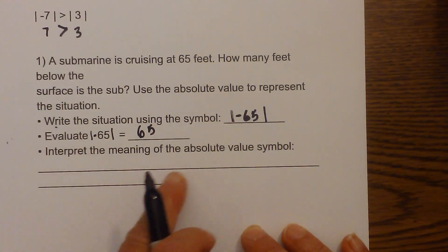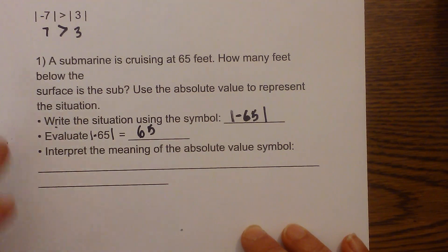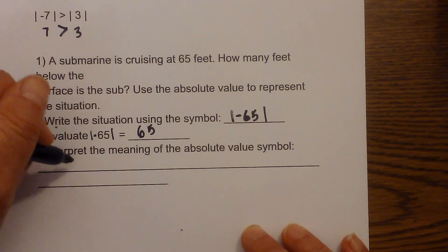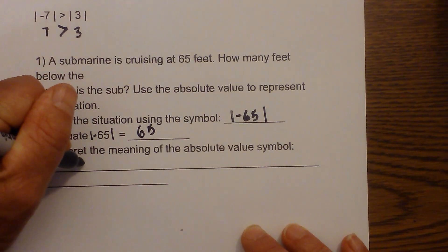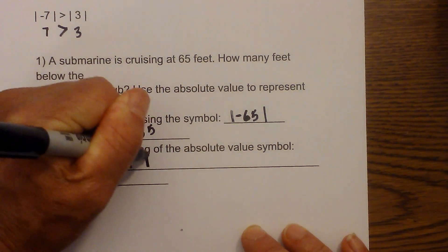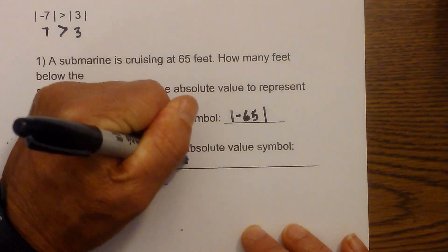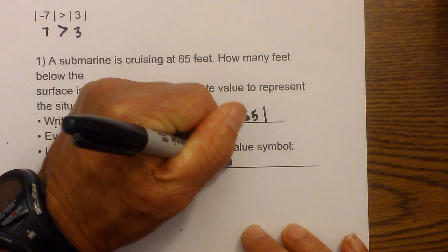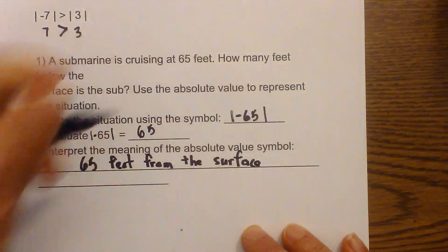Interpret the meaning of the absolute value symbol. It just means that it is 65 feet from 0. And the surface would be 0. So it is 65 feet from the surface, and we are going to assume the surface is 0.